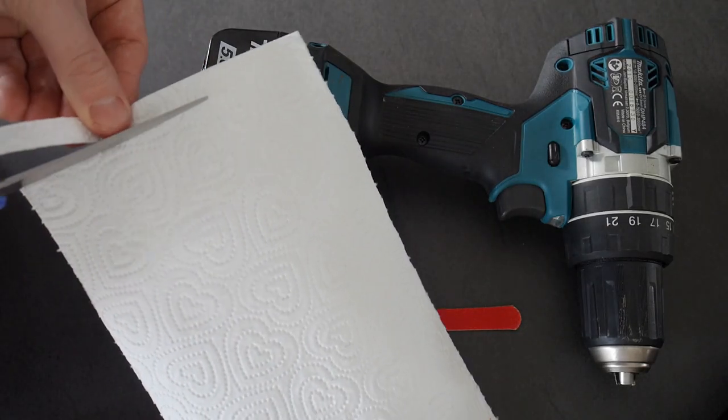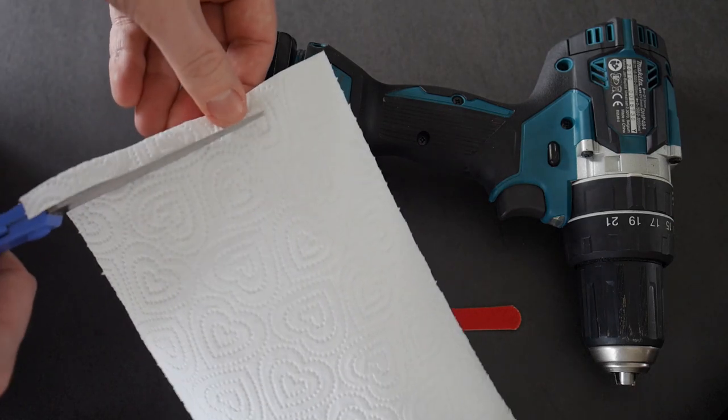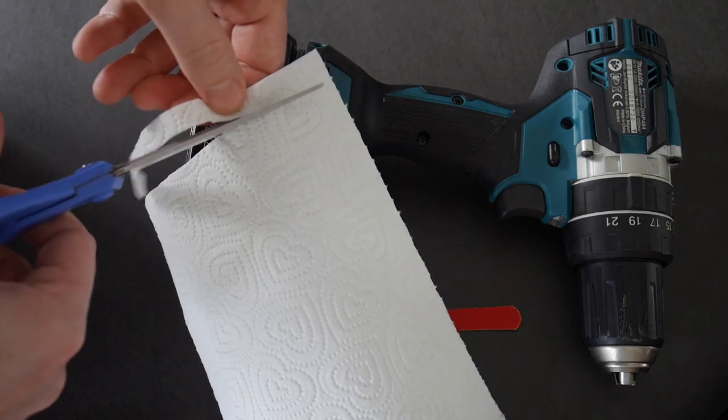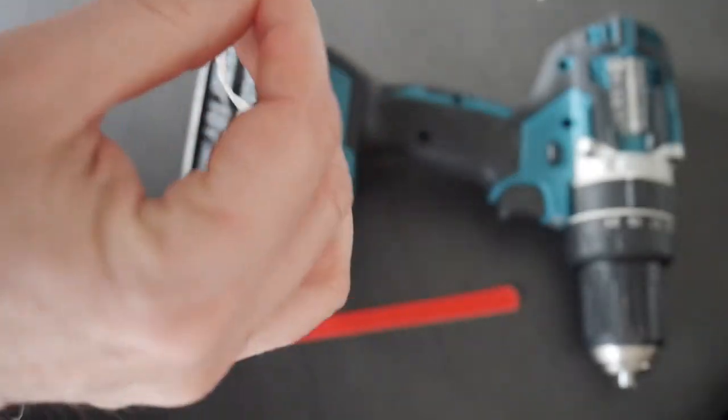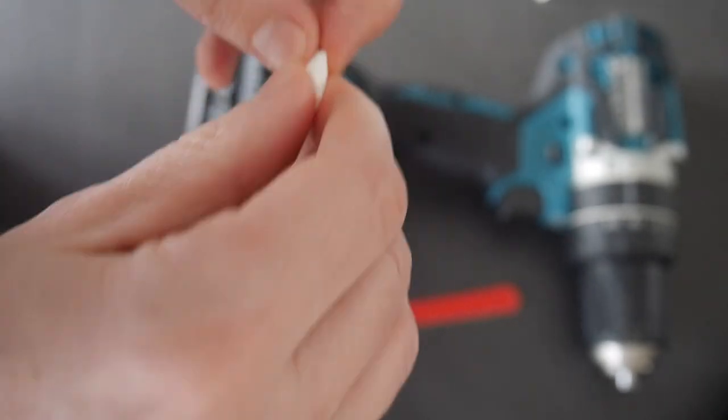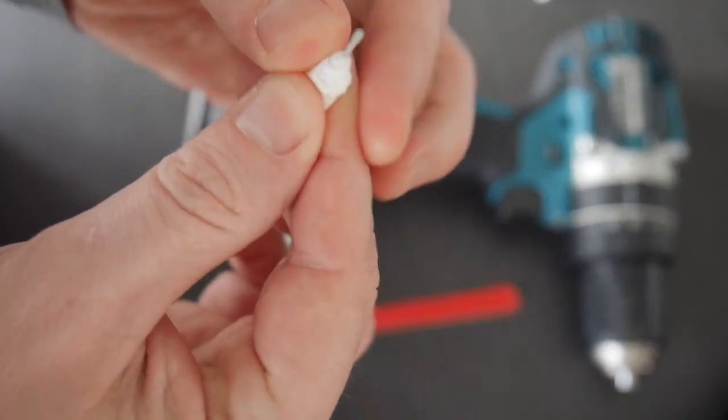I cut a strip about a centimeter wide. Then I'm going to wrap this tape around my nib so I can attach it to the chuck of my drill.